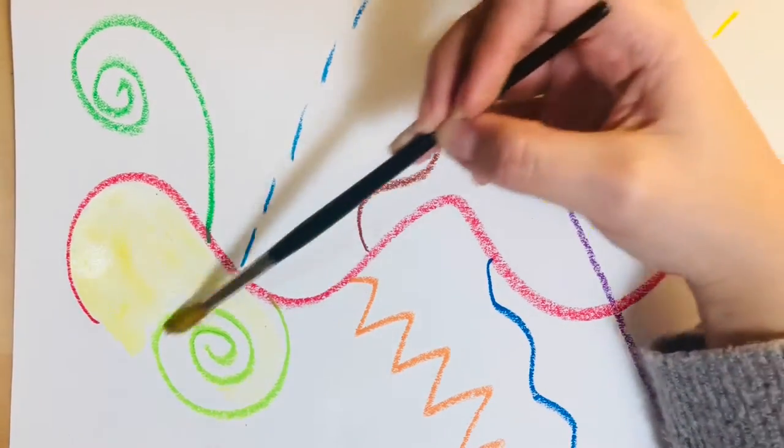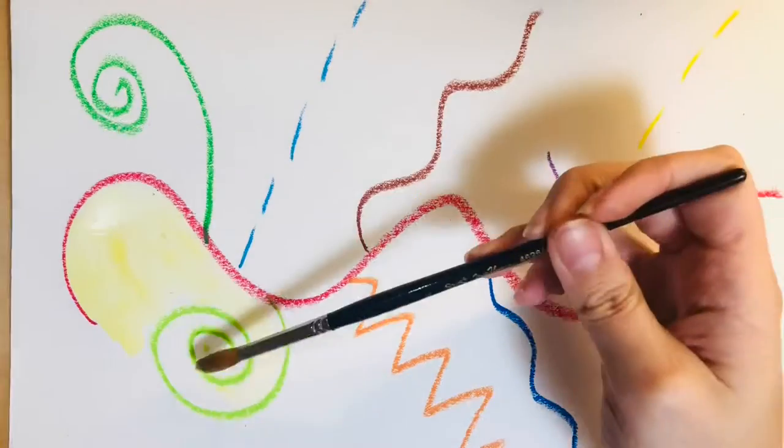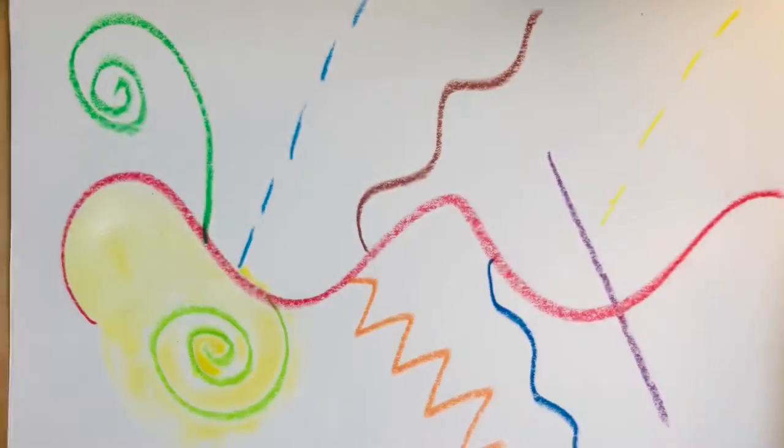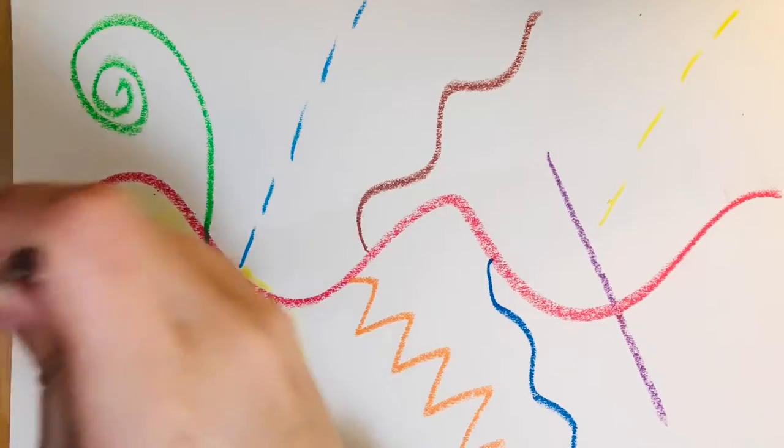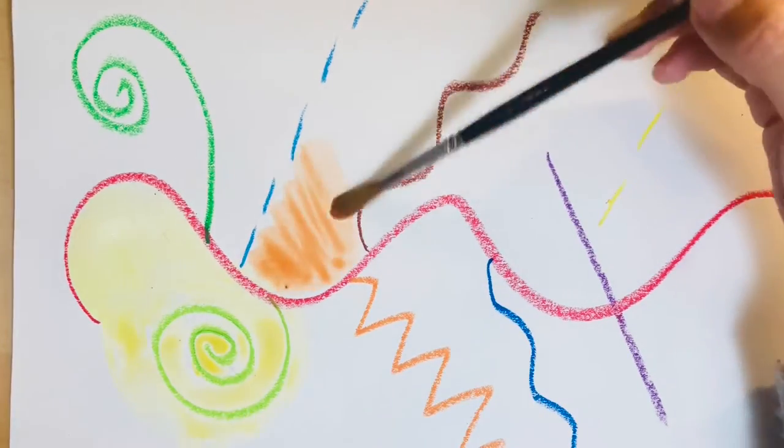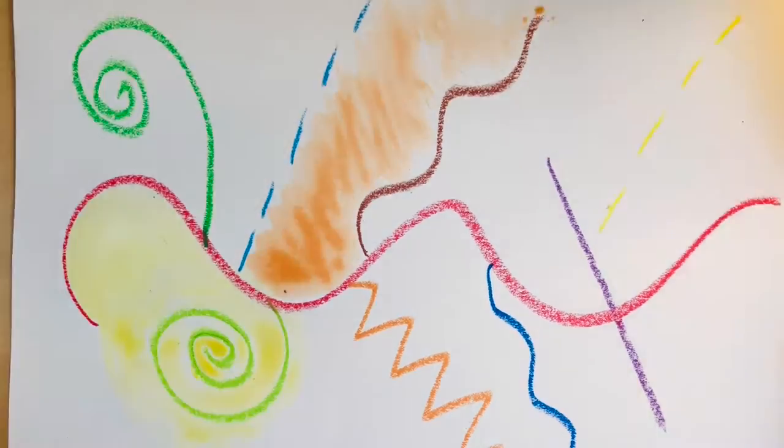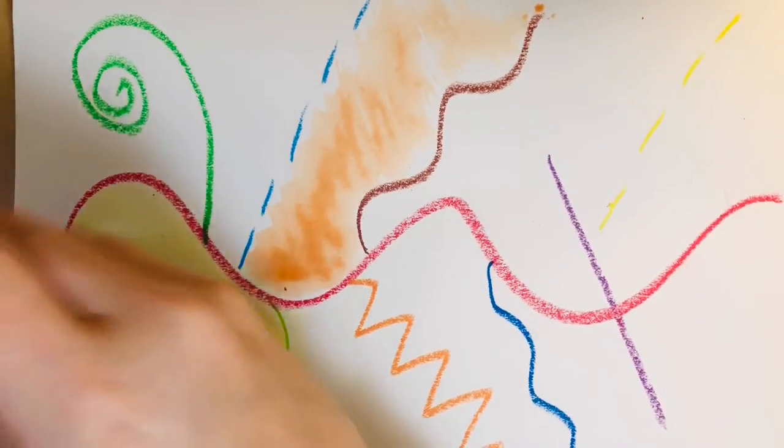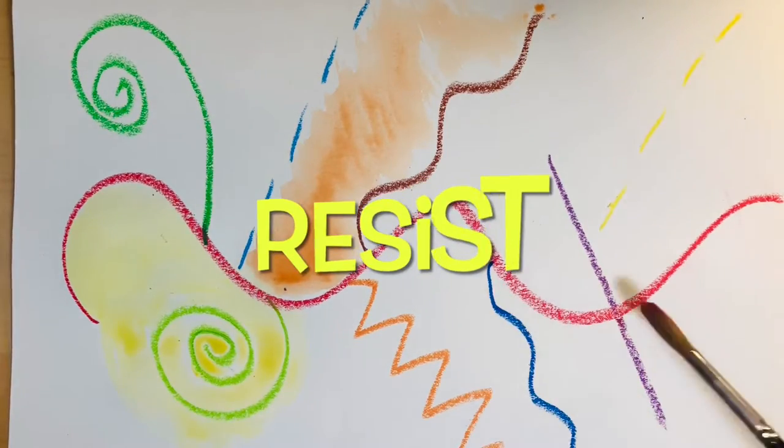If you do not have watercolors, you can use color pencils, crayons, or color markers, but try to do it lighter than the color of your lines so they are still visible. We see that my paint did not cover my lines, and that is called resist.